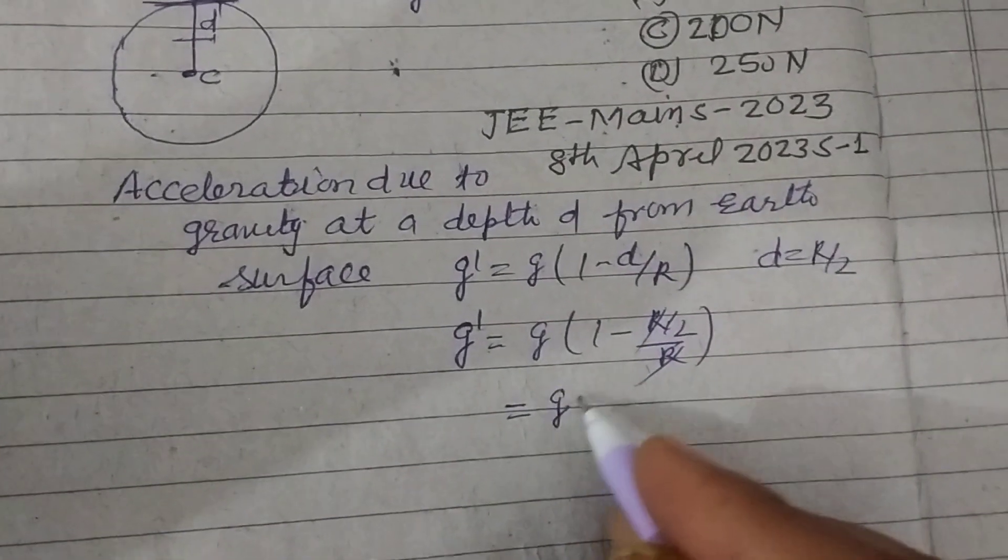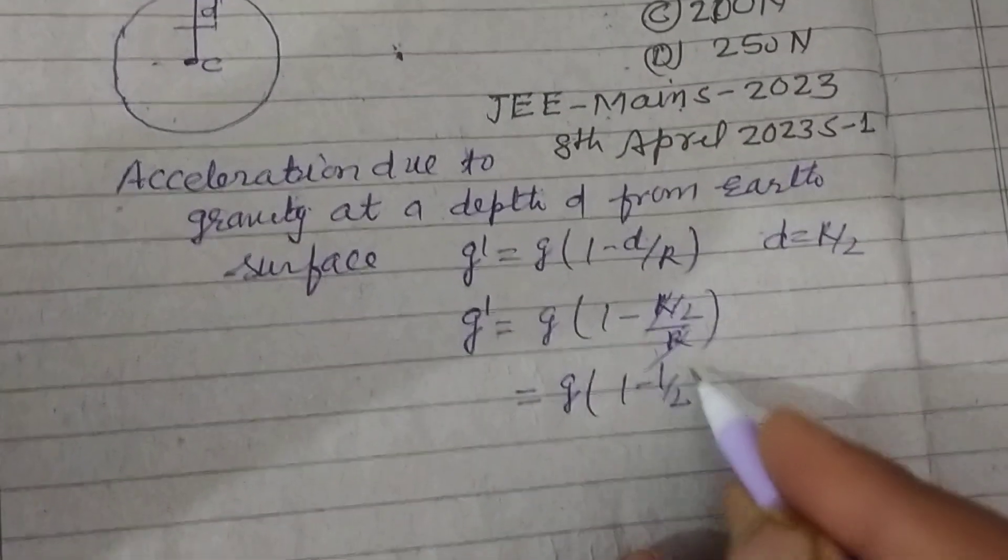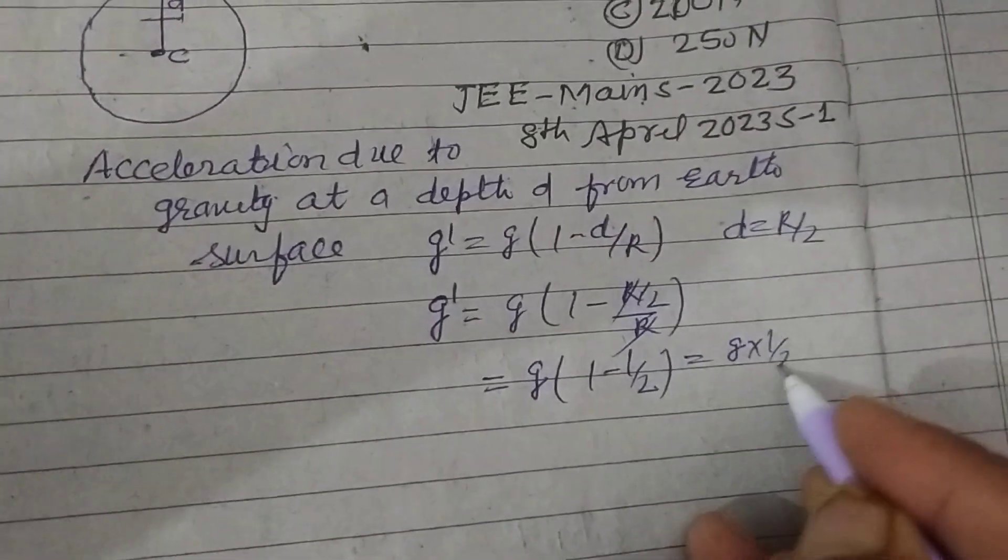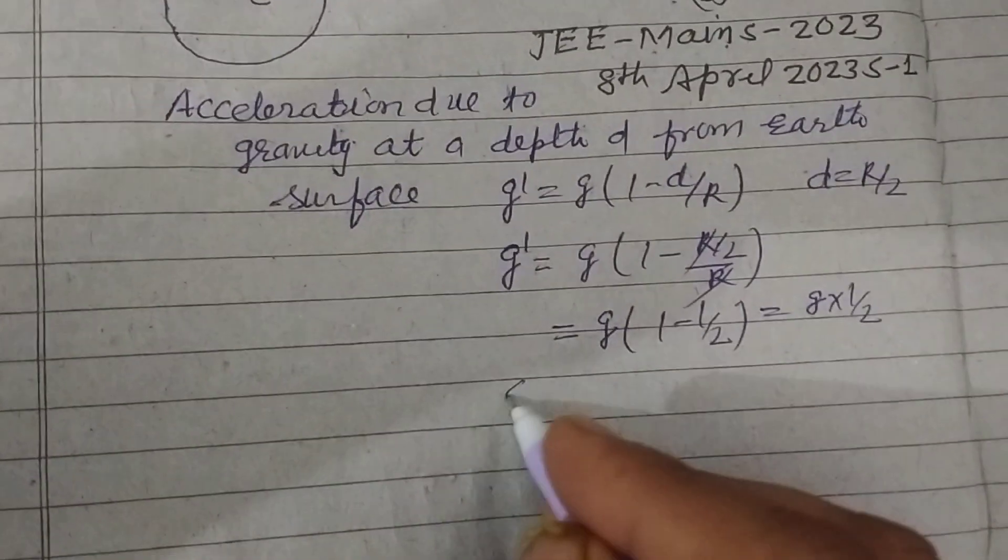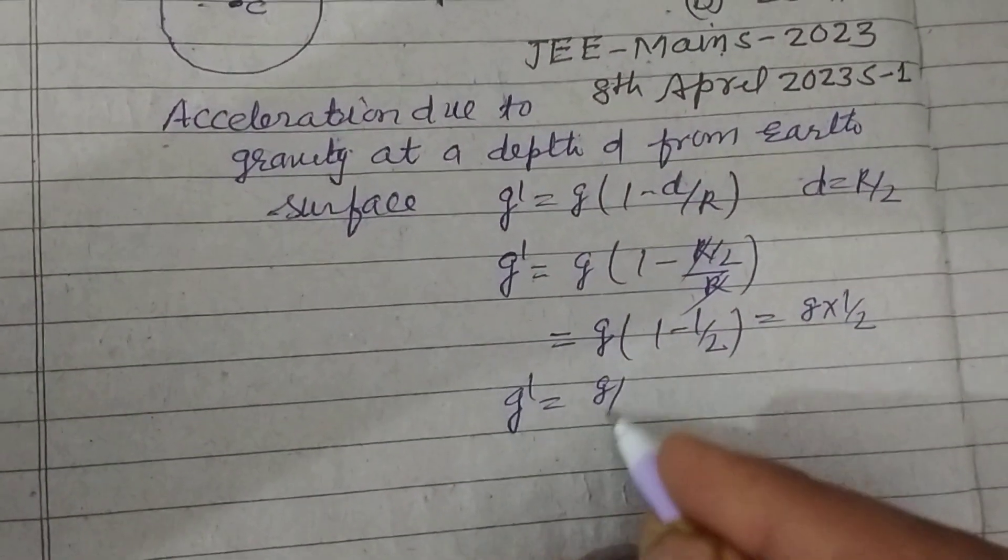So 1 minus 1 by 2, and this is g into 1 by 2, so g dash equal to g by 2.